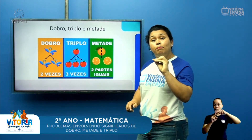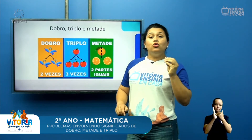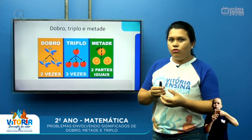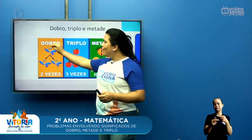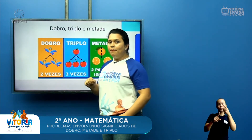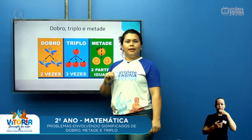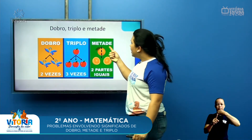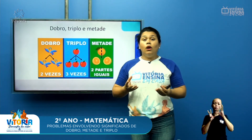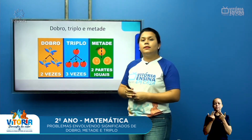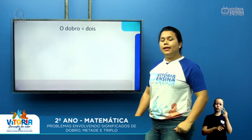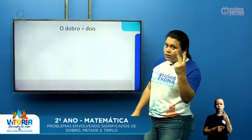Dobro, triplo e metade. O dobro é eu pegar o quê? É duas vezes aquela coisa. O exemplo aqui de um passarinho: o dobro do passarinho é duas vezes ele. O triplo de uma maçã é três maçãs, são três vezes essa maçã. E a metade? A metade é eu pegar um todo e dividir. O dobro de um passarinho são dois passarinhos.